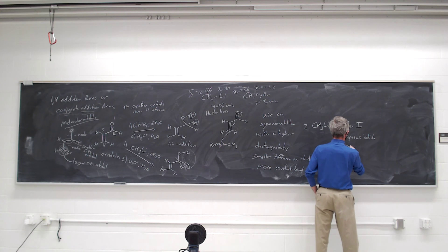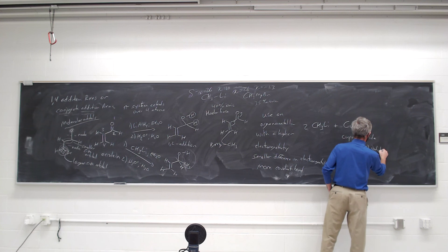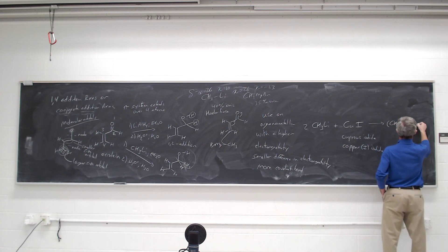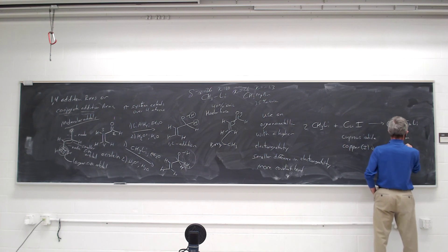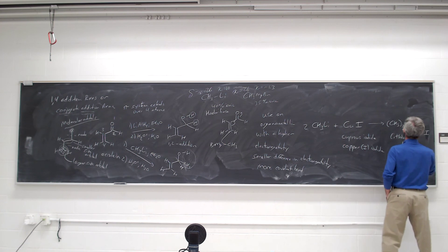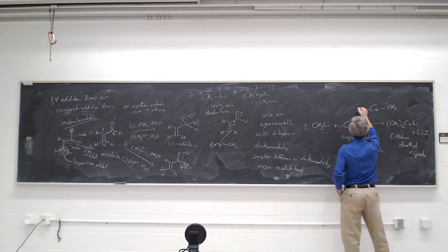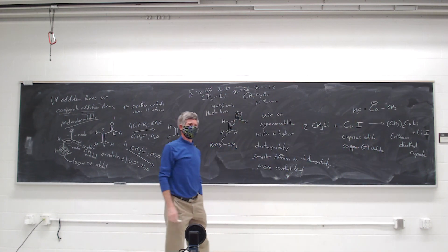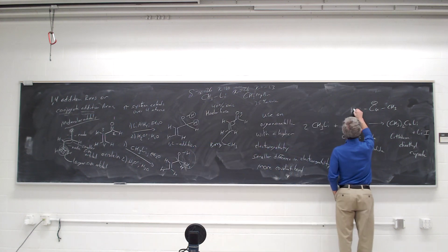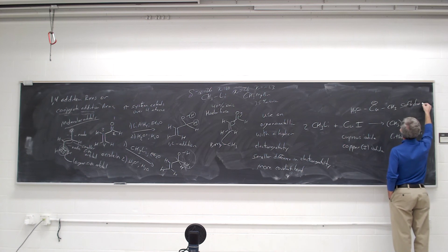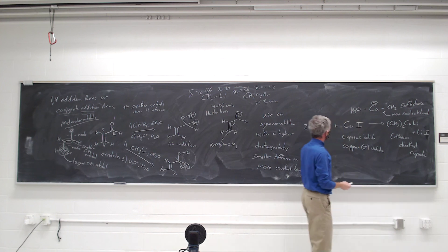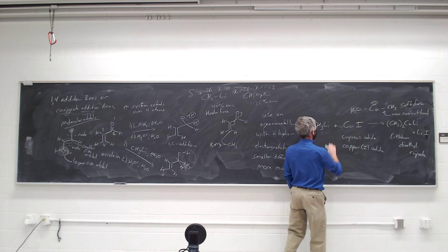A non-polar covalent bond has a difference in electronegativity of 0.4 or less. A polar covalent bond typically between 0.4 and 2. And then if it's greater than 2, we say it's an ionic bond entirely. So we're looking for a metal that has a higher electronegativity to make a smaller difference in electronegativity and make the bond more covalent. And the answer is copper. Because it turns out that if you take two methyl lithiums and react it with cuprous iodide, or copper(I) iodide, you can actually make a organocuprate reagent.